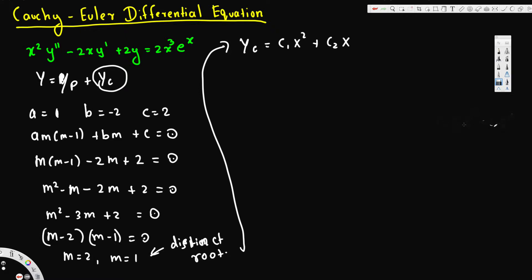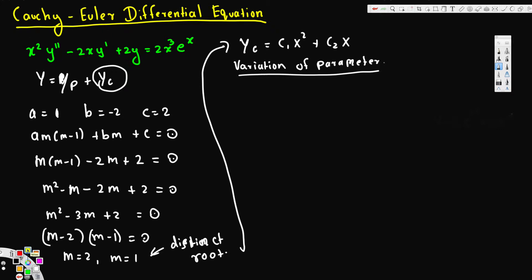Now we've found the complementary solution. The next step is the particular solution. The particular solution method is the same whether it's Cauchy-Euler or not — we are going to use the variation of parameters technique. In variation of parameters, we first have to bring the equation into standard form, meaning nothing should be multiplying y double prime.